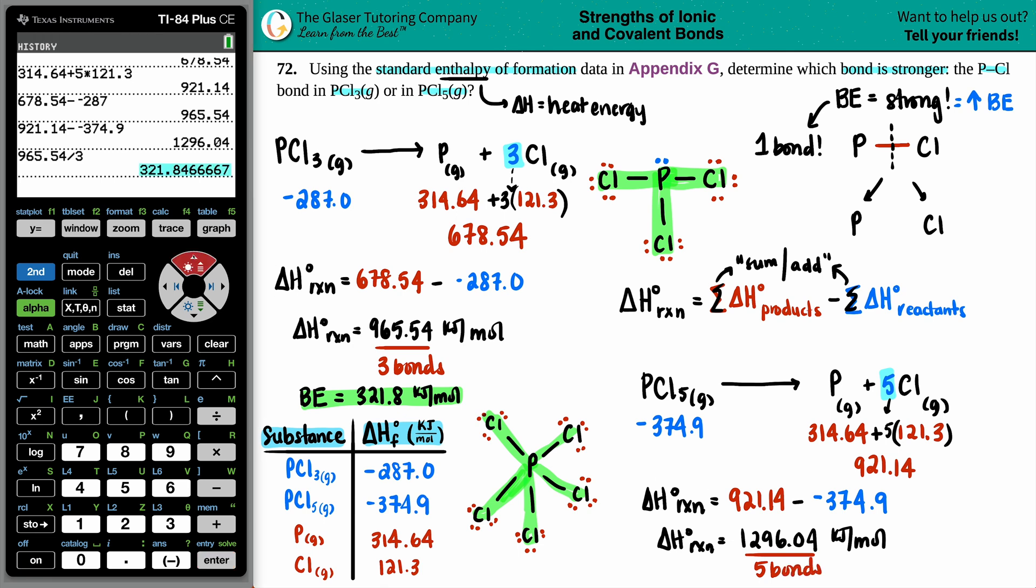So we're going to take that value and divide it by five bonds. My BE is 259.2 kilojoules per mole.